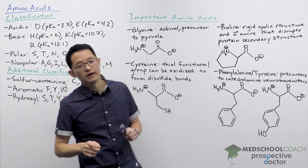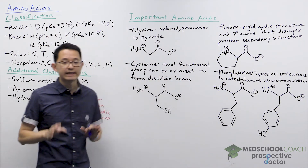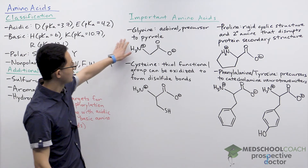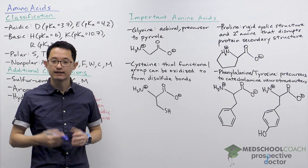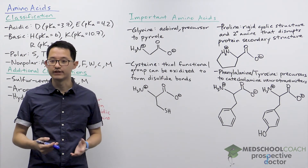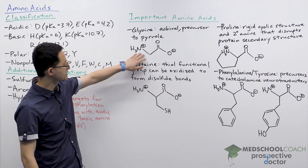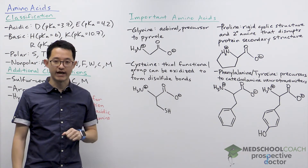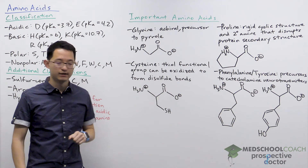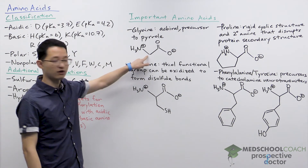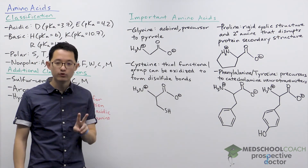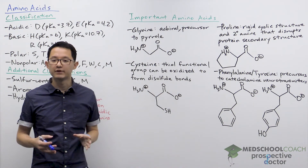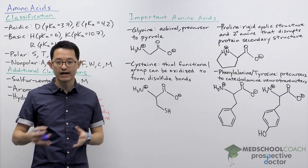Now let's focus more on a few key amino acids. The first is glycine, which is very unique because if you look at its structure, its side chain is a hydrogen atom. Because this alpha carbon is bound to two hydrogens, glycine is the only amino acid that is achiral.